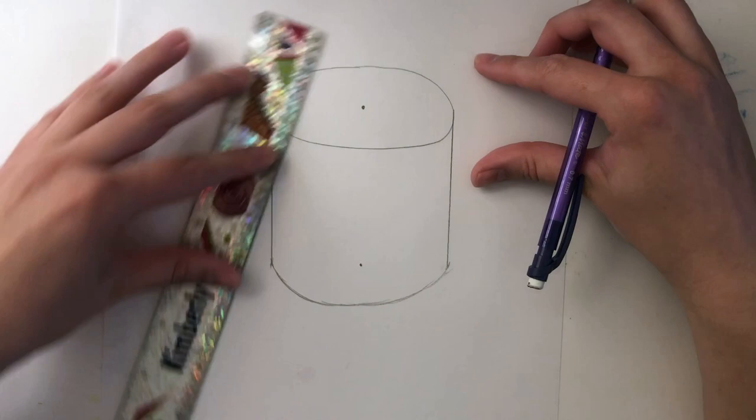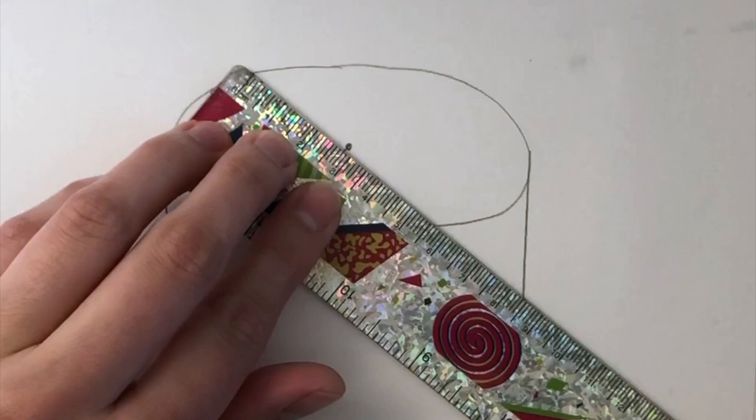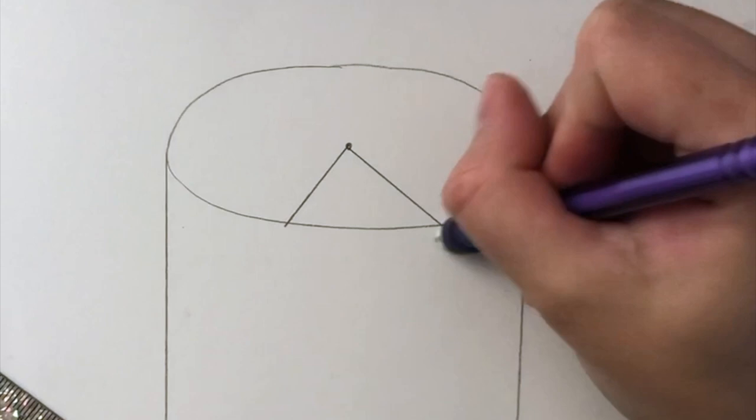Now it's time to create the slice in our cake. So yours can be as wide as you want. Go ahead and draw two lines coming out from that center point to determine the width of your slice.